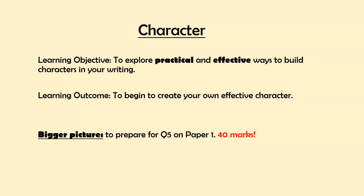So this week we are building on from our prior learning on setting and we're going to look at another big aspect of narrative writing. This can also, like setting, be used if you choose the descriptive writing option and it is, of course, looking at the title there, about character. Our objective today is to explore practical and effective ways to build characters in your writing. By the end of the two lessons today, you will begin to create your own effective character. Thinking about the bigger picture, it is going to be to prepare for question five on paper one.